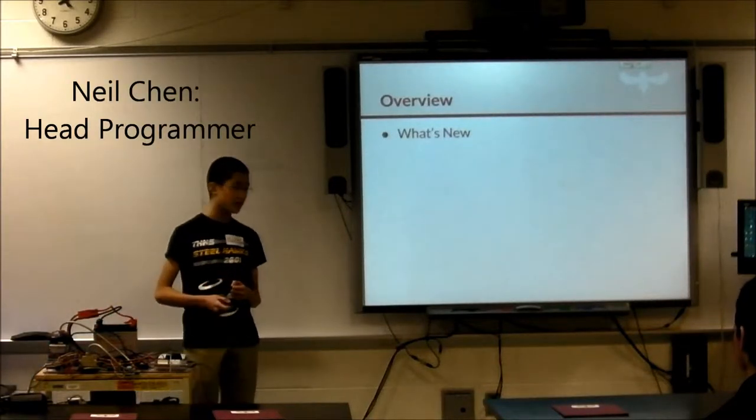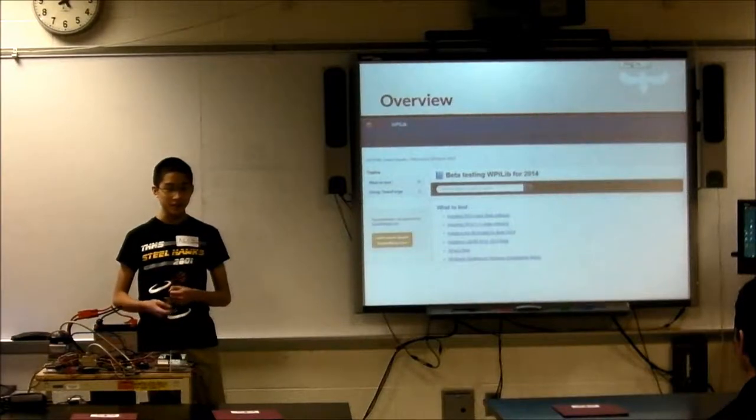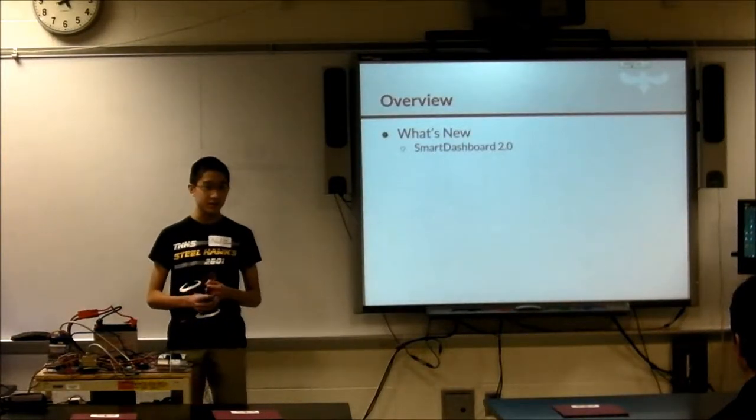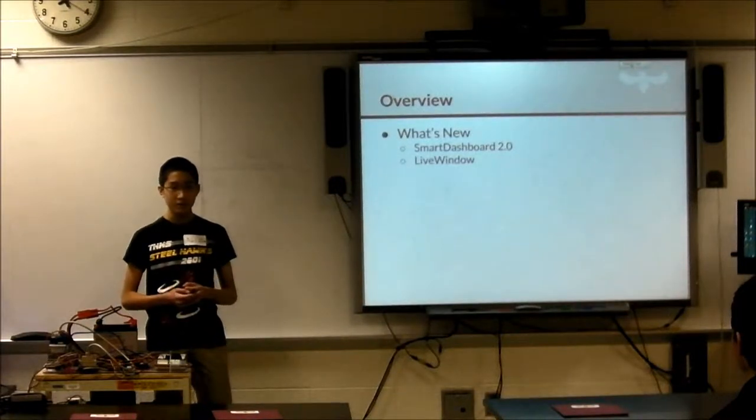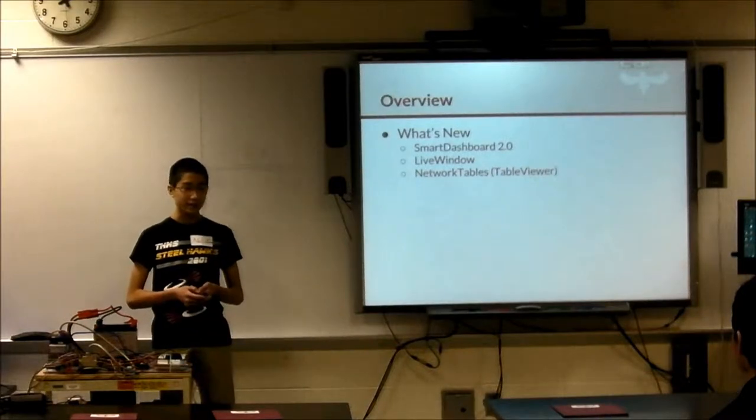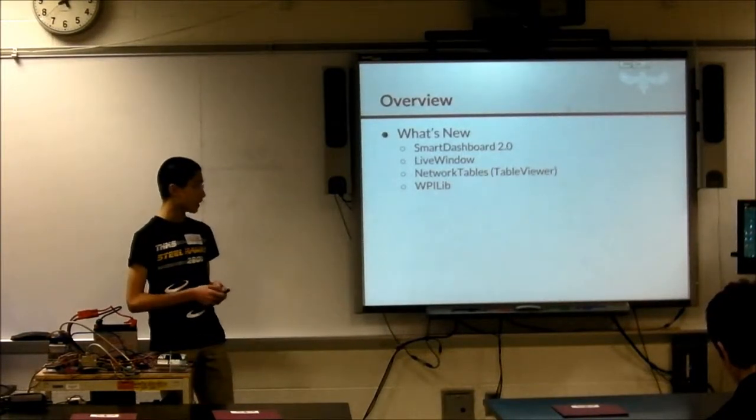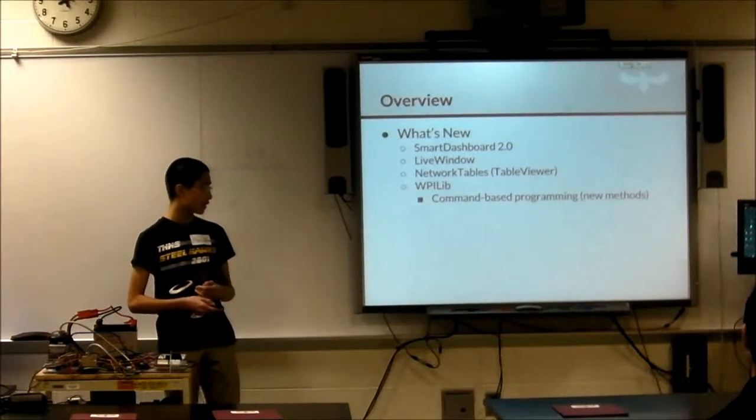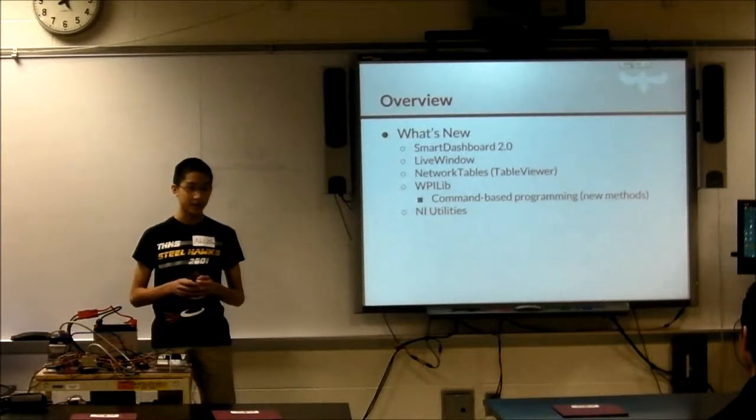The changes to the libraries and tools this year are not as drastic as they may have been in years before, but there are still some significant changes. The most major addition is a new Smart Dashboard, Smart Dashboard 2.0, a completely new interface with new tools. There's also a live window, which is part of Smart Dashboard, allowing us to communicate with the robot. Network tables with a utility called Table Viewer also lets us communicate values and data. There are some changes to WPI Libs, command-based programming, and the NI utilities now have a standalone installer that lets you install everything quickly in just one download.